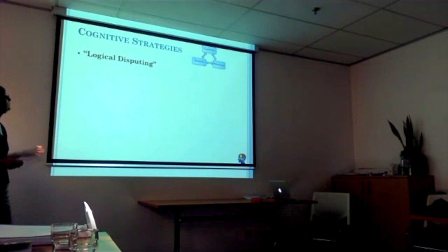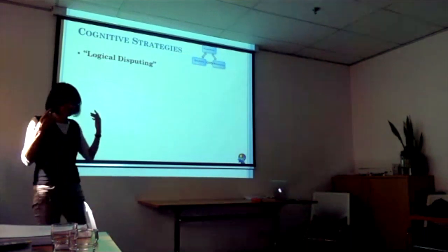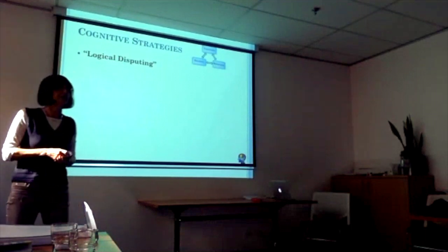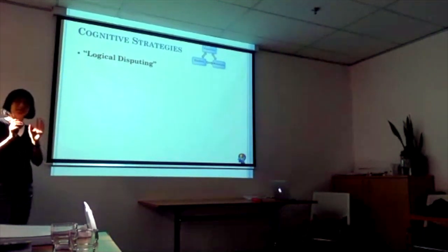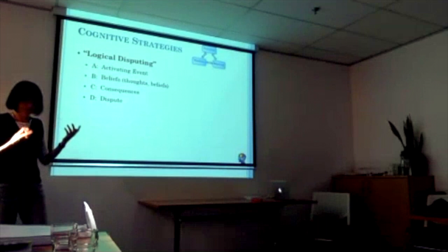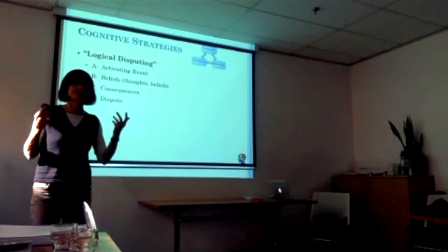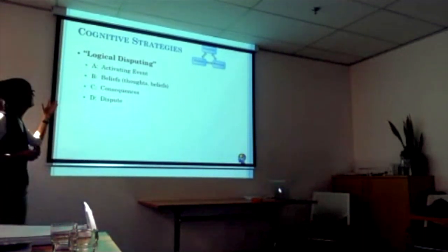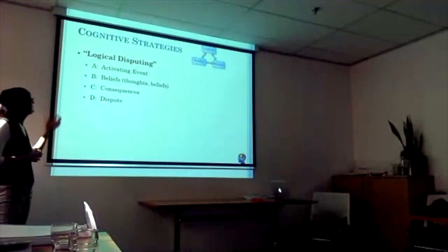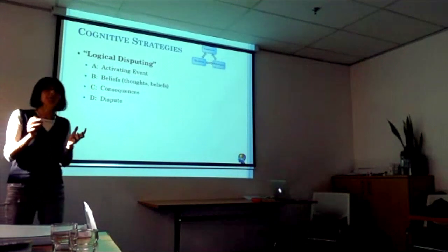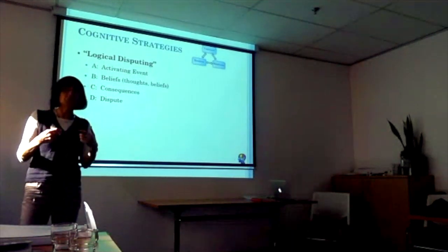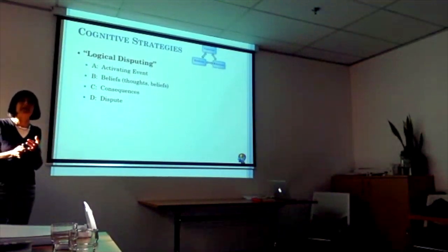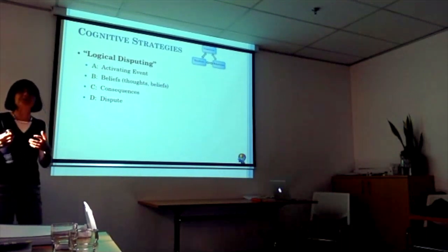When talking about cognitive strategies, we immediately think of disputing and challenging our thoughts. The classic model initially developed by Albert Ellis — one of the pioneers of CBT — was the ABCD model. A stands for activating event or trigger. B stands for beliefs — really what we're talking about is cognition, the underlying thoughts and beliefs in that situation. C stands for consequences, which includes our emotions and our behaviours. And D stands for dispute — the process of challenging.